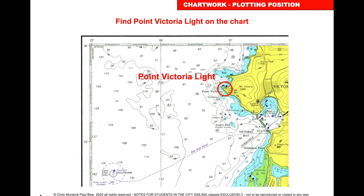First, find Point Victoria Light on the chart. The position of a light on a lighthouse is in the dot in the middle of the star symbol. Here is Point Victoria Light — dot, star. We know it is a light because it has a small purple or magenta teardrop next to it, but the precise position is right in the centre of the star.